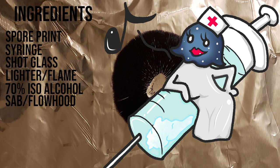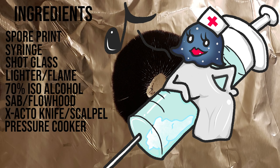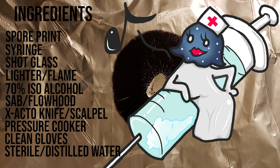A still air box or a flow hood to work in, an exacto knife to scrape the spores with, a pressure cooker to sterilize your equipment, some gloves, and some sterilized water. Or if you don't have that you can use distilled water.